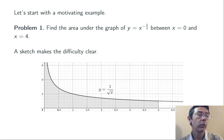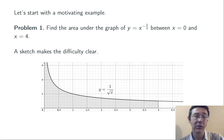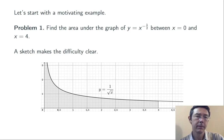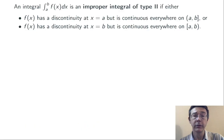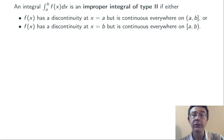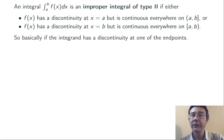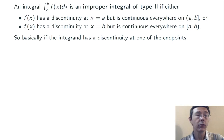Even worse, we can't use the second fundamental theorem of calculus to compute that area because of that vertical asymptote at x equals 0. So we're going to have to cope with that somehow. Let's have a basic definition: an integral from a to b of f of x dx is called improper of type 2 if you have a discontinuity at one of the endpoints, but the integrand is continuous everywhere else.